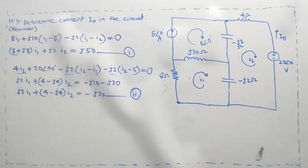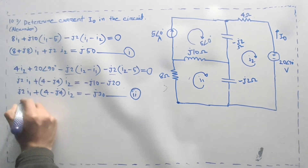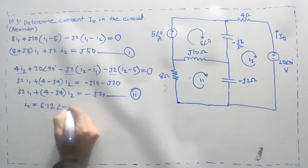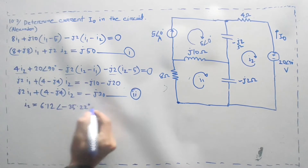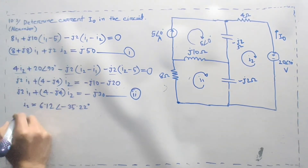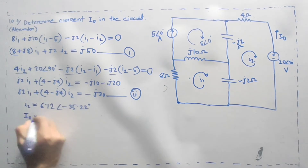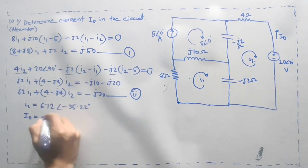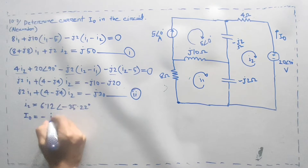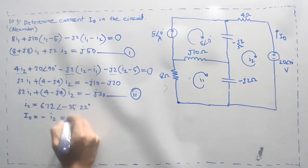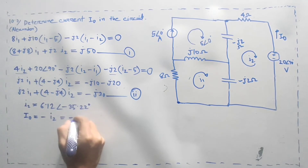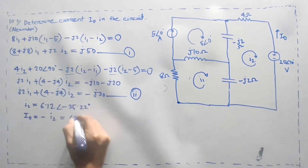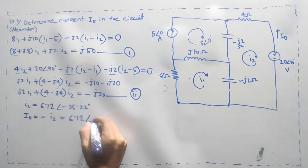I am going to get the value of the i2 value. The value of i2 is 6.12 angle minus i2. The i2 value is opposite direction — same current but opposite direction. I2 value is equal to minus i2. The result is 6.12 angle 144.